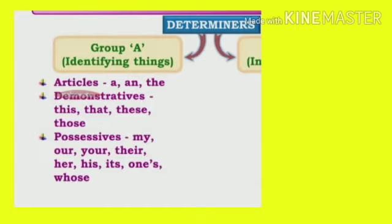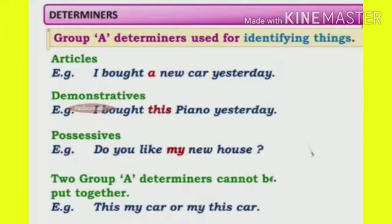Group A determiners are used for identifying things. First come articles: A and THE. Secondly, demonstratives: this, that, these, those. And last, possessives: my, our, your, their, her, his, its, one's, whose. So Group A determiners are used for identifying things.